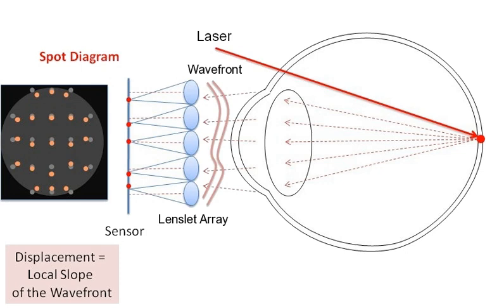It consists of an array of lenses called lenslets of the same focal length. Each is focused onto a photon sensor, typically a CCD array, CMOS array, or quad cell.